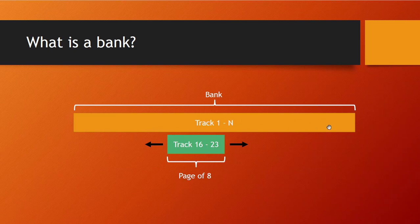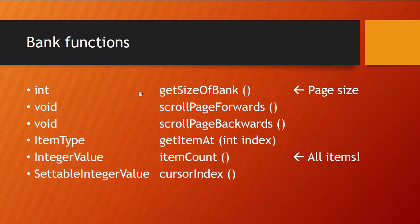What you need to do is give the user an option to move a window up and down inside that bank. This window is called a page. In this example, we have 1 to N tracks — let's say 54 — and we're currently showing eight tracks, numbers 16 to 23. Bitwig helps you a lot with creating such a bank; the only thing you basically have to decide is how large your page should be: four, six, 16 — it depends on how many controls you have on your controller.